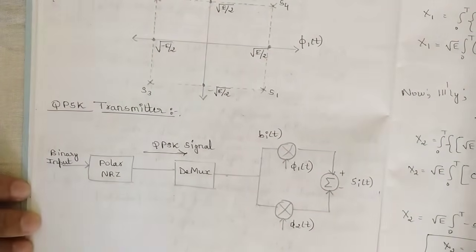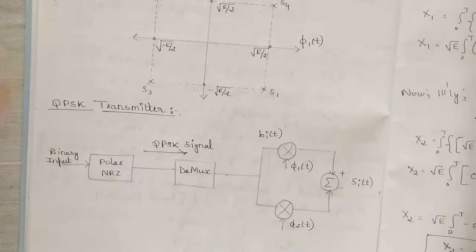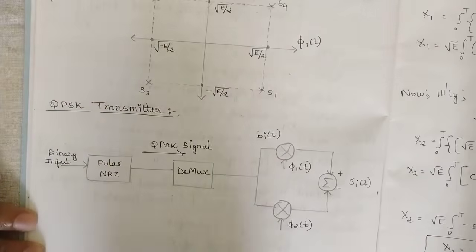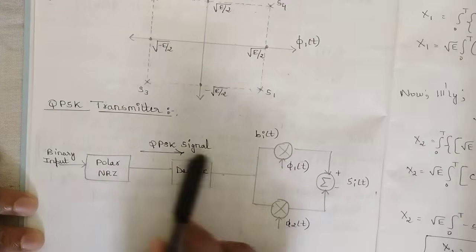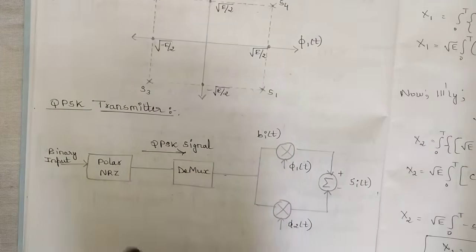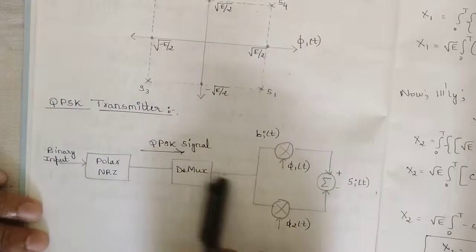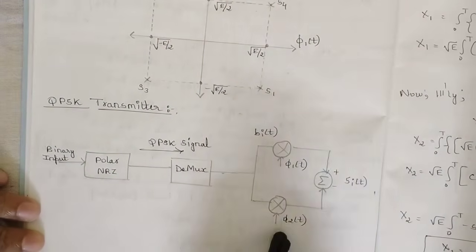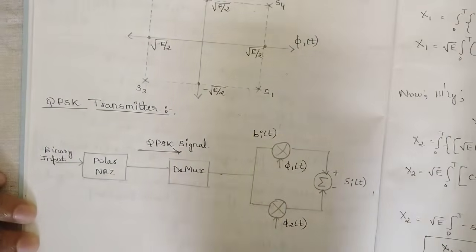For the QPSK transmitter: a group of binary input (one of four combinations: 10, 01, 00, 11) is given first, then polar NRZ level encoding takes place. The output is fed to a demultiplexer, whose job is to reduce the bit level, slicing down to one bit. That output is given to the two basis functions φ1(t) and φ2(t), and their summation gives the final transmitted signal si(t).